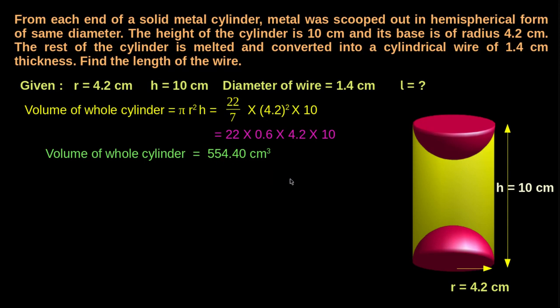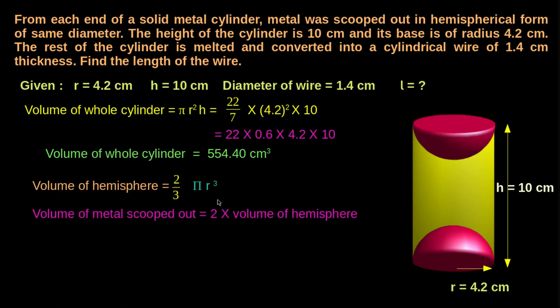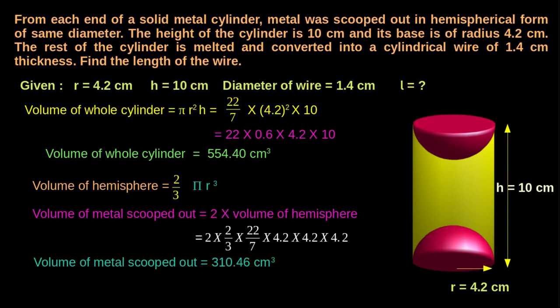From this, let us take out the volume of the metal scooped out, that is the volume of two hemispheres. The volume of a hemisphere is given by (2/3)πr³. Since we have to take out the volume of two hemispheres, the volume of metal scooped out is equal to 2 times the volume of one hemisphere. On substitution, we get the volume of metal scooped out as 310.46 cm³.